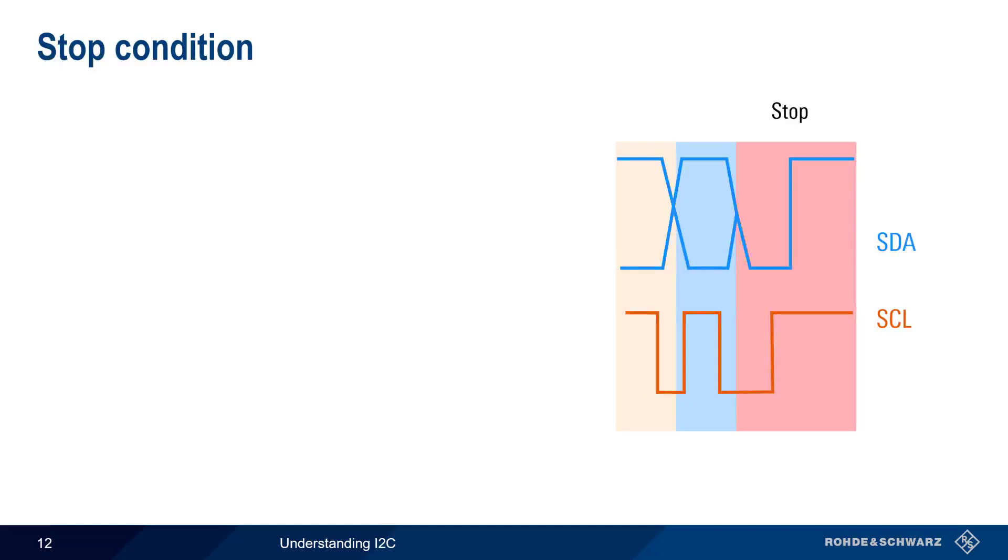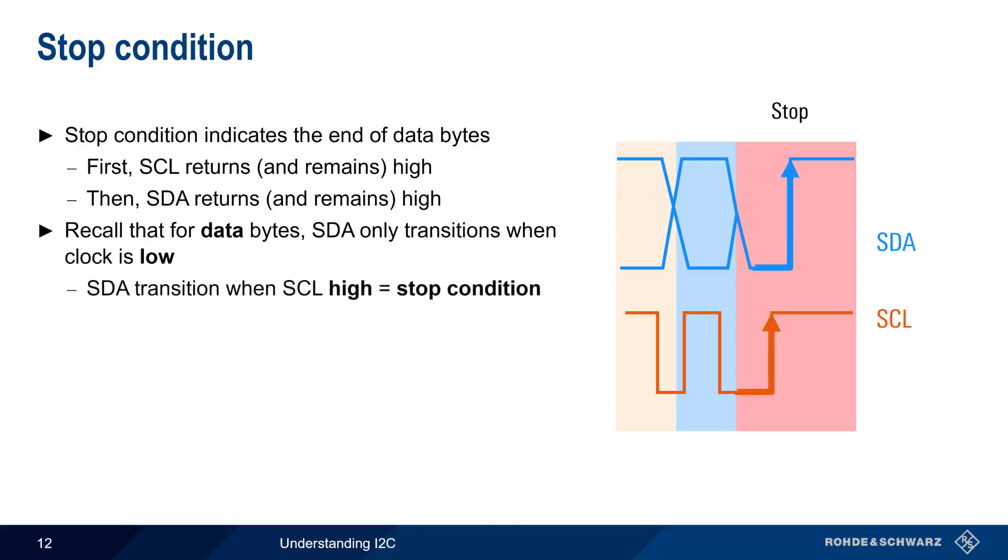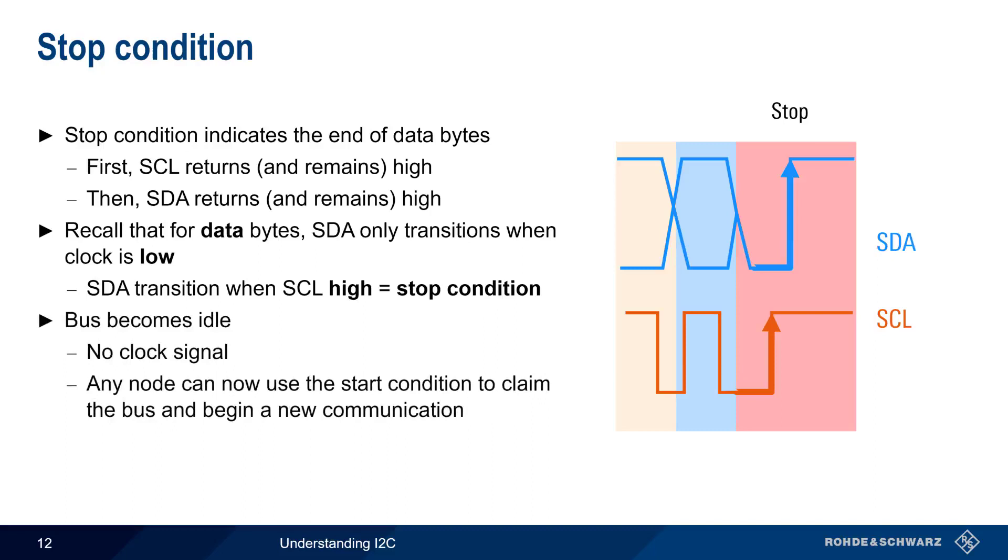Since the number of data bytes can vary, there must be a way to indicate that the final data byte has been sent, and this is done using the stop condition. First, the SCL line is allowed to return high and remains high, and then SDA returns high and remains high. Recall that for data bytes, SDA only transitions when the clock is low. If SDA transitions when the clock is high, this unambiguously indicates the stop condition. After the stop condition, the bus becomes idle. There's no clock signal, and any node on the bus can use the start condition to claim the bus and begin a new communication.